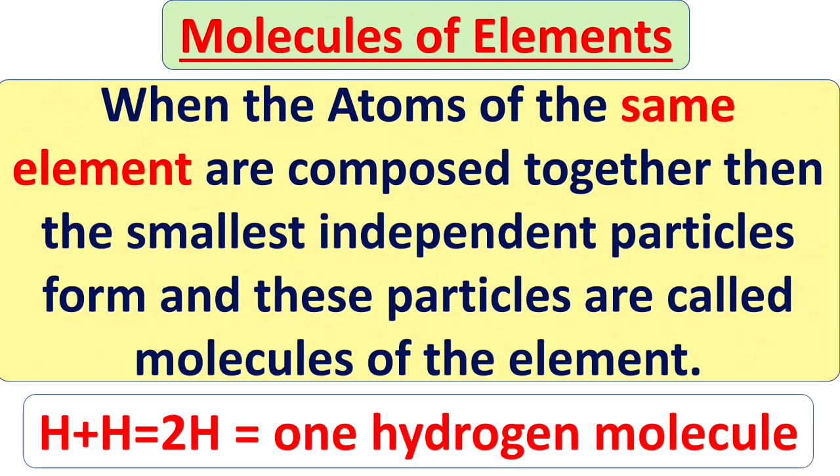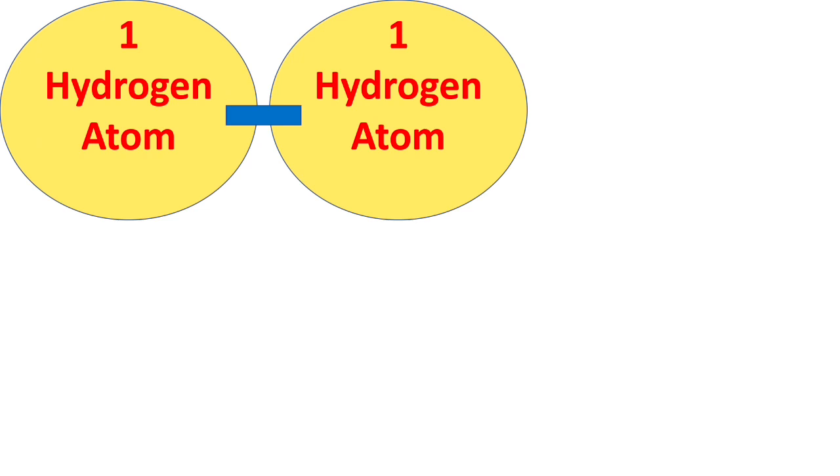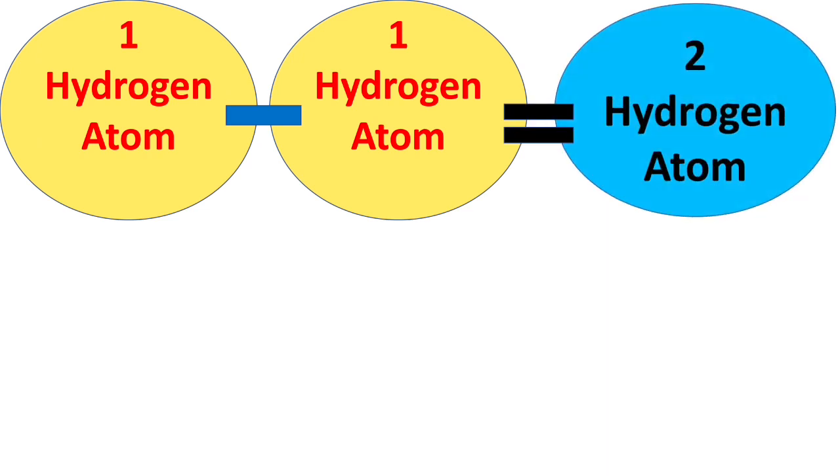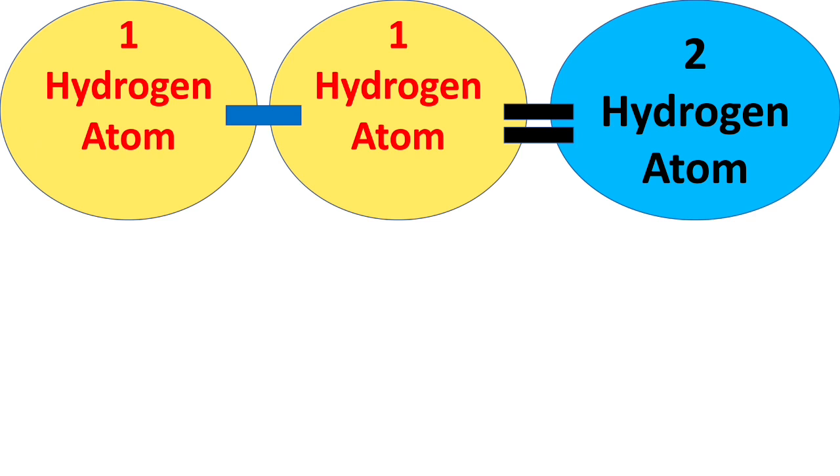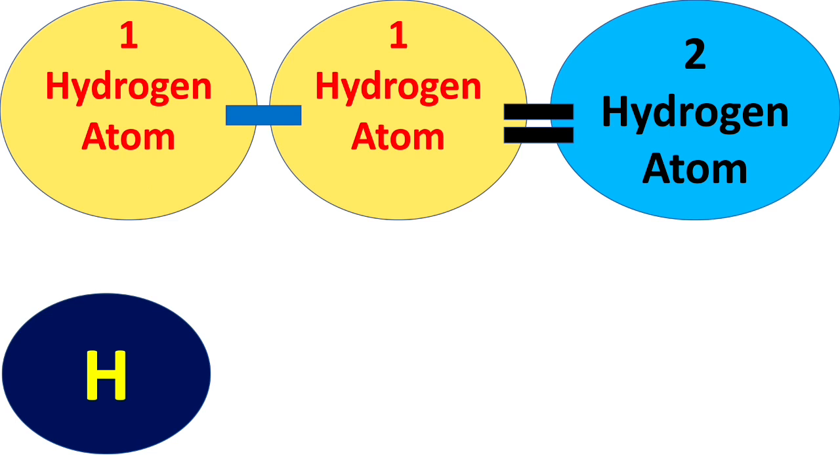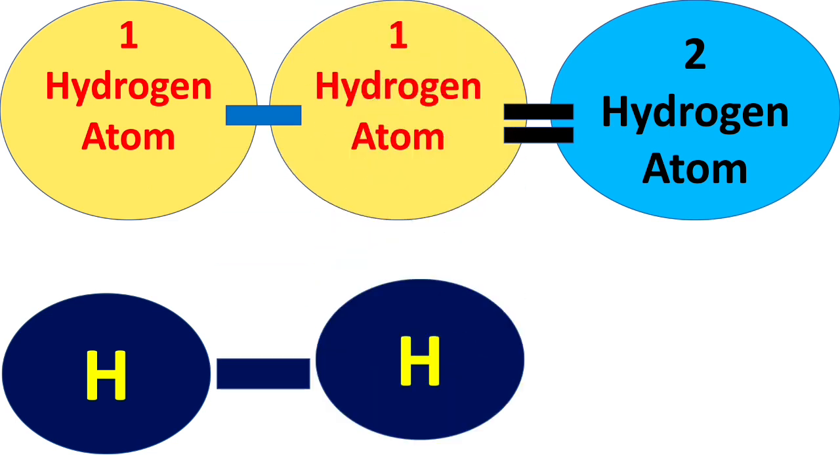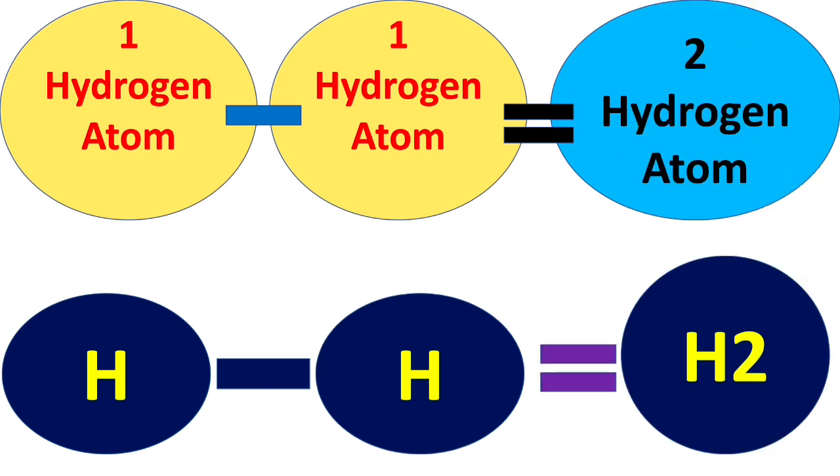See here the example: H plus H is equal to H2, that is one hydrogen molecule. Now see here, H is the symbol of hydrogen. If there is one hydrogen atom and one more hydrogen atom is added, then it will become two hydrogen atoms. When one hydrogen atom, that is H, is combined with another hydrogen atom, it will make H2 or hydrogen molecule.